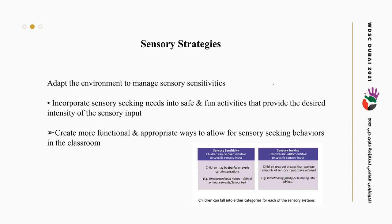We can also incorporate sensory-seeking needs into safe and fun activities that provide the desired intensity of sensory input. Some children may be hyporesponsive to vestibular or proprioceptive input — they like to move and run. In this case, the teacher or parent should contact the occupational therapist to complete a sensory profile, identify the child's needs, and create a sensory diet. For example, scheduling input every two hours or twice per day — it varies per child. We can also use sensory strategies in the classroom, like providing a fidget, doing brushing, or placing a weighted blanket on the child's lap.